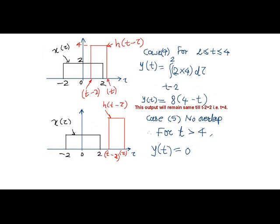In the last case when h of t minus tau has completely come out of the area of x of tau there is no overlap. This happens when t is greater than 4 and hence the output remains 0.